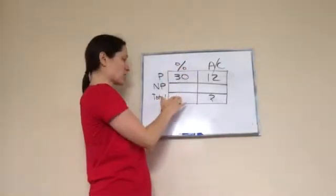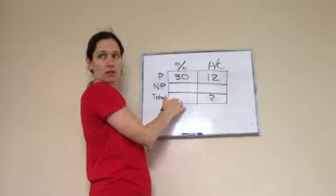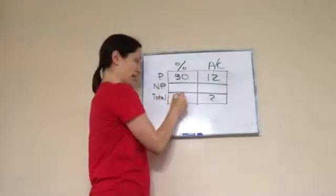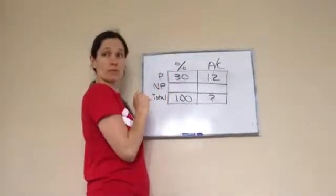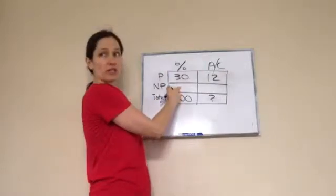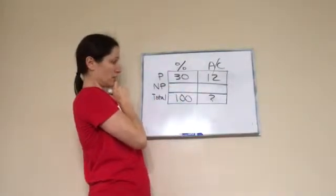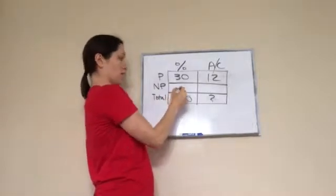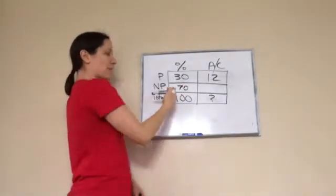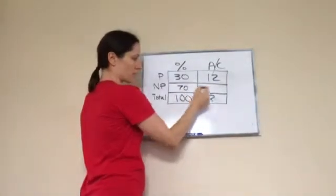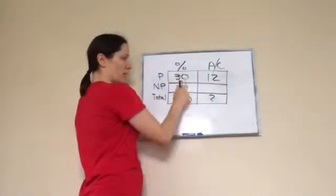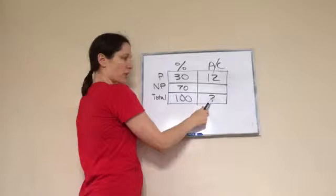Could I determine what this is? So it'd be 100 minus 30, which would be 70. Yeah.